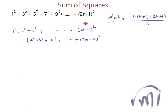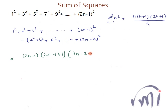This is the sum of the first (2n−1) squares, which can be written as (2n−1) multiplied by (2n−1+1), because in this formula I am substituting 2n−1 in place of n. So the bracket becomes 2n−1+1, and this will be 4n−2+1, divided by 6.